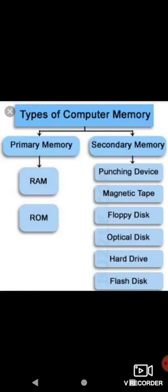Types of computer memory: primary memory includes RAM and ROM. Secondary memory includes punching device, magnetic tape, floppy disk, optical disk, hard drive, and flash disk. This is just an example to illustrate the different categories.